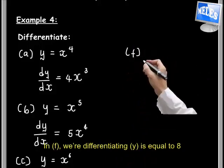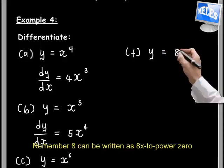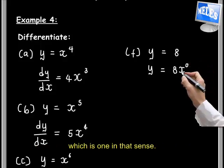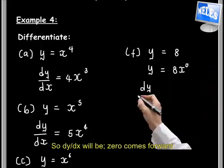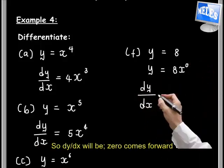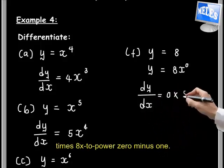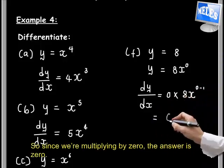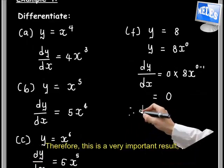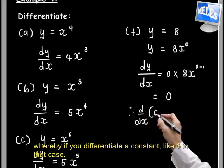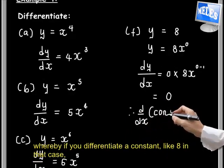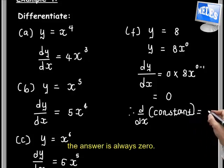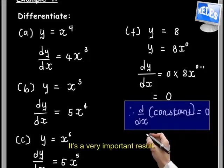And f: differentiating y equal to 8. Remember, 8 can be written as 8x to the power of 0. So dy/dx will be 0 comes forward times 8x to the power of 0 minus 1. Since we are multiplying by 0, the answer is 0. This is a very important result: if you differentiate a constant, the answer is always 0.